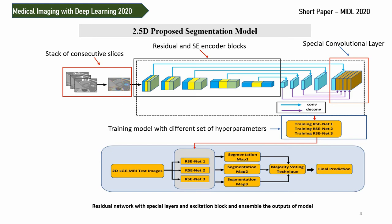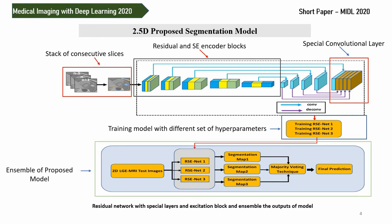In the third step, we trained the model with different sets of hyperparameters, and based on experimental evaluation we selected the top 3 models and passed these to an ensemble method based on majority voting technique. This majority voting technique produces the output segmentation map that is the best map produced by our method.